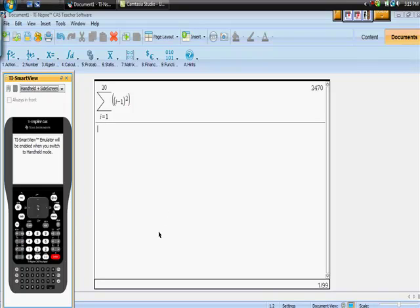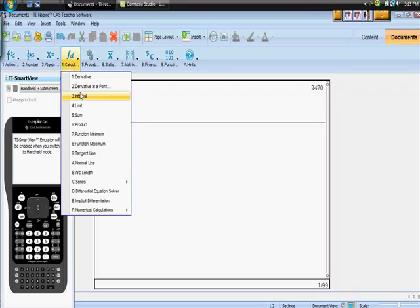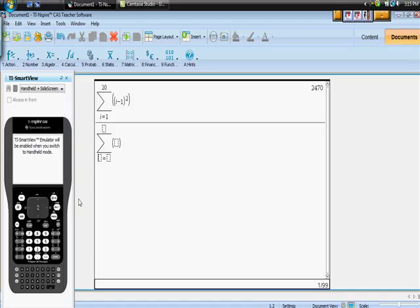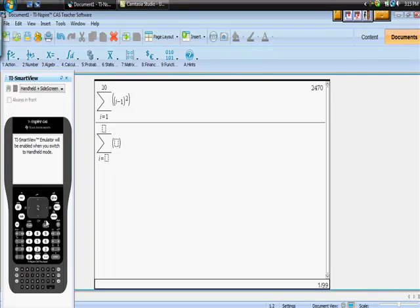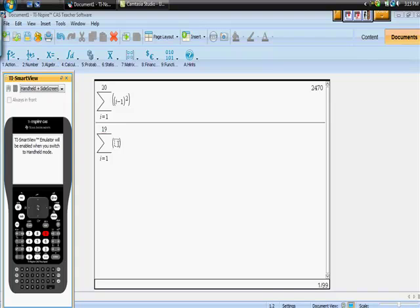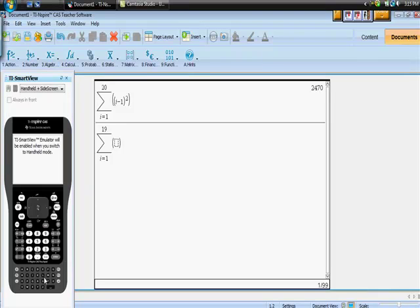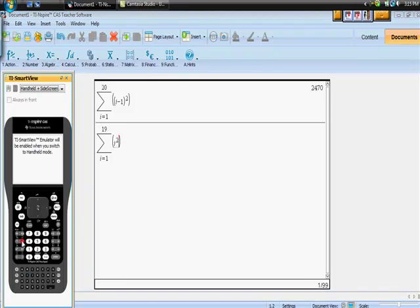So, just some proof using your calculator. Let me try this just to make sure that I didn't lie. Calculus, sum, i, 1 to 19. Let's see if that would give us the same answer here of just i squared. And lo and behold.